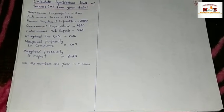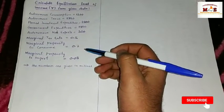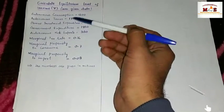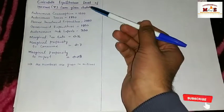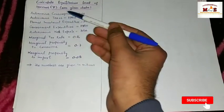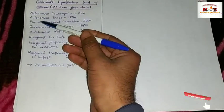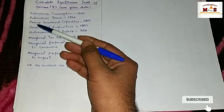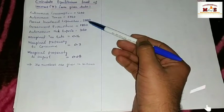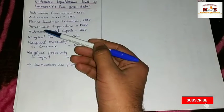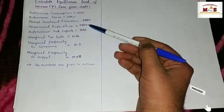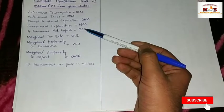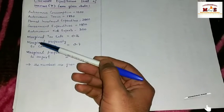Hello, my curious friends. Today in this video we are going to learn about how to calculate the equilibrium level of national income from the given data. The data is given as: autonomous consumption equals 1200, autonomous taxes equal 1750, planned investment expenditure equals 2800, and government expenditure equals 1950.